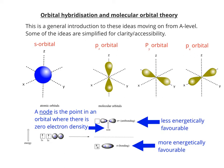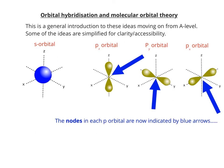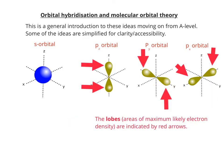A node is the point in an orbital where there is zero electron density. The nodes in each P orbital are now indicated by blue arrows. The opposite of a node is a lobe, and the lobe is an area of maximum likely electron density, and the lobes are now indicated by red arrows.